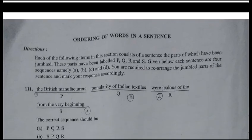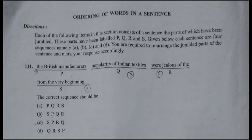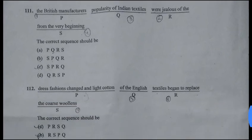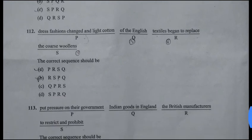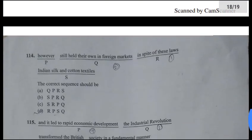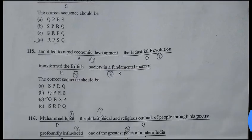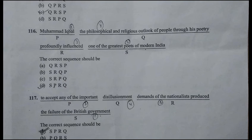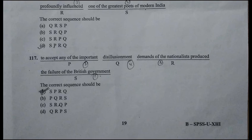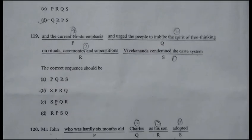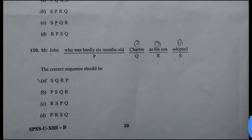Now we will order words and sentences, and I will directly give you the answers. Question 111 answer is C: S, P, R, Q. Question 112 answer is: P, R, S, Q. Question 113 answer is C: R, P, S, Q. Question 114 answer is D: R, P, S, Q. Question 115 answer is C: Q, R, S, P. Question 116 answer is D: S, P, R, Q. Question 117 answer is S, P, R, Q. Question 118 answer is D: Q, R, P, S. Question 119 answer is S, P, R, Q. Question 120 answer is S, Q, R, P.